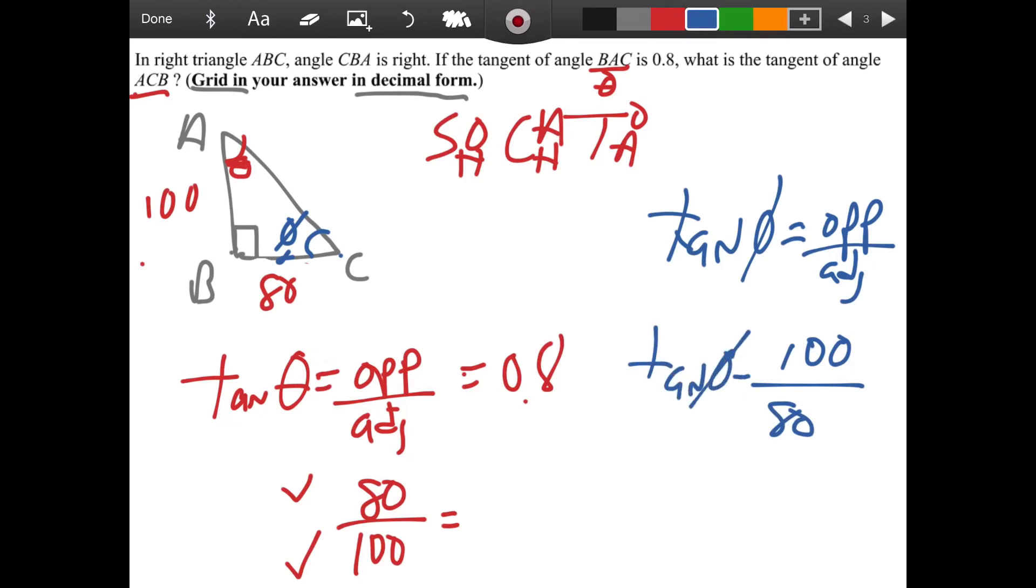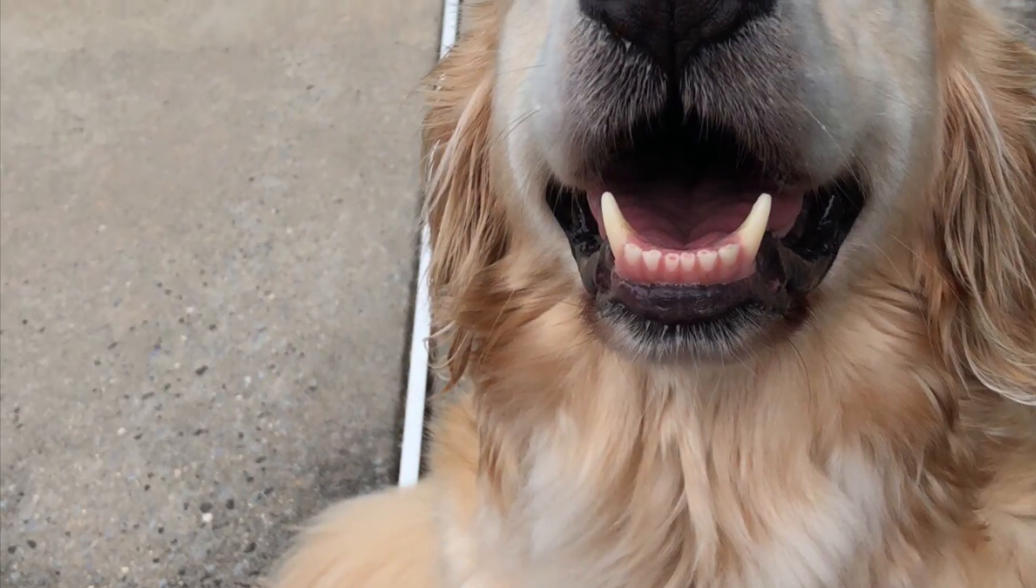So the tangent of phi equals 100 over 80. It wants it in decimal form. So I do 100 divided by 80, and I get 1.25.